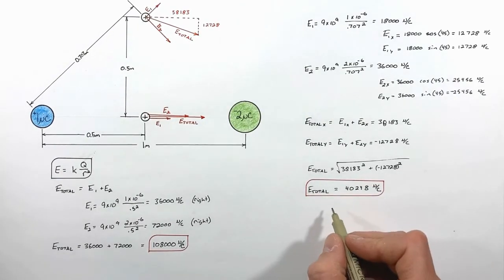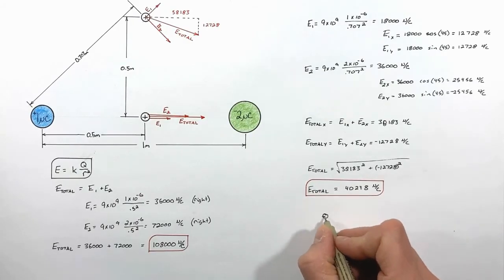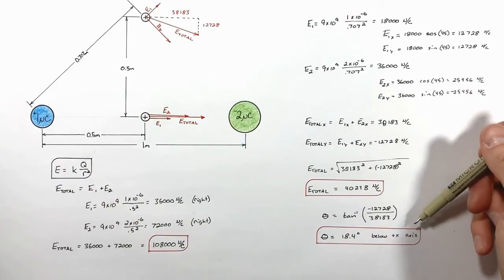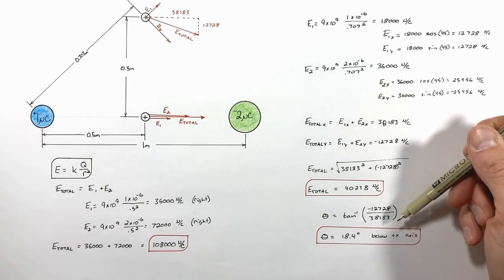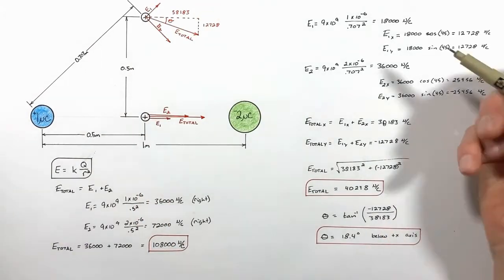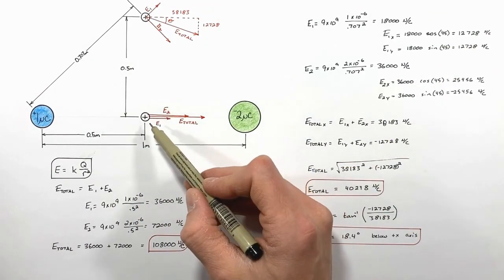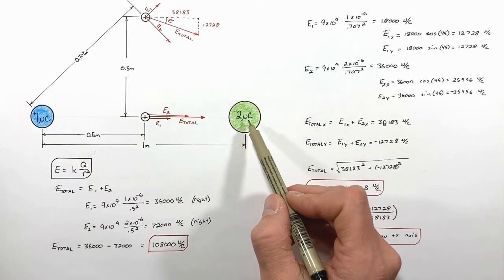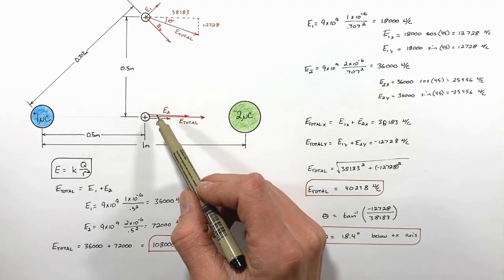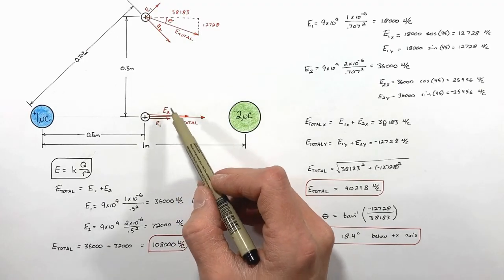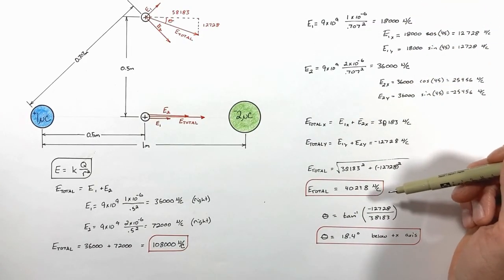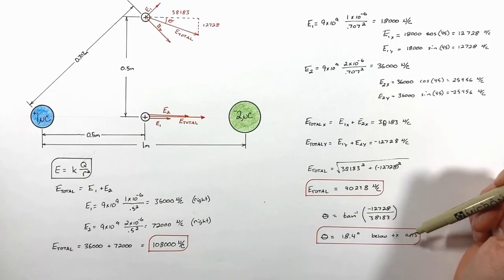To find the direction of the electric field we use the inverse tangent, and we find the electric field has a direction of 18.4 degrees below the positive x-axis. So what we've seen in this problem is that the total electric field at any point due to a series of charges is simply the sum of all the electric fields at that point. We have to be careful because electric fields are vectors, so we need to do vector addition to determine the fields and their directions.